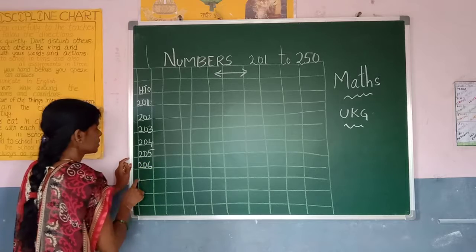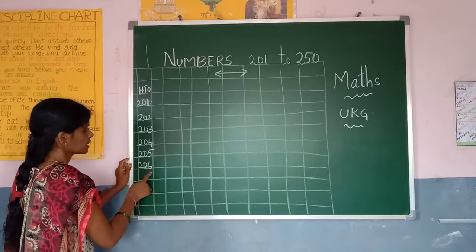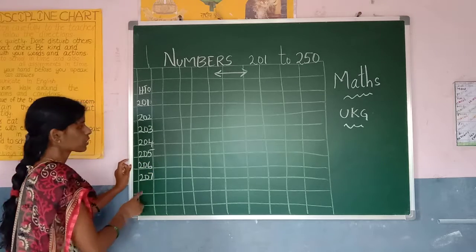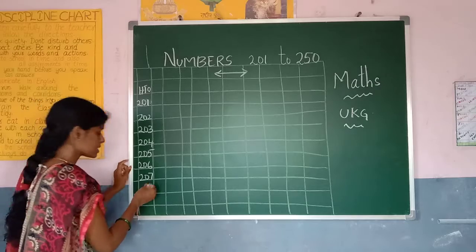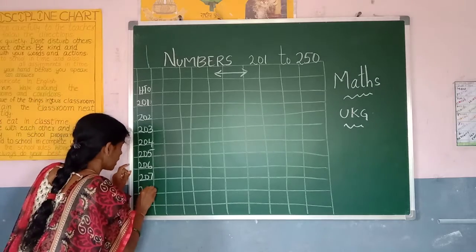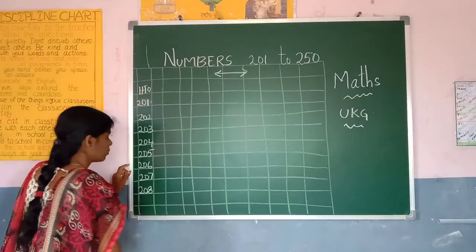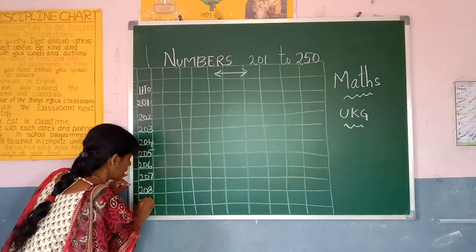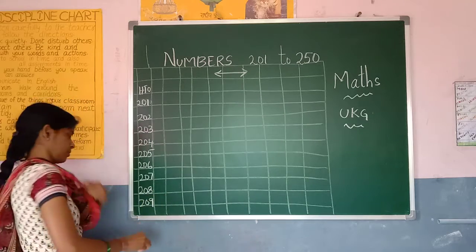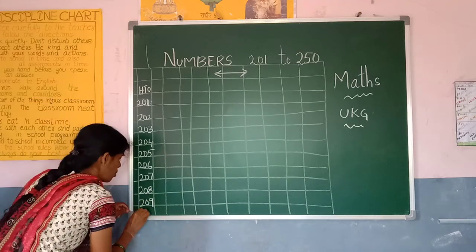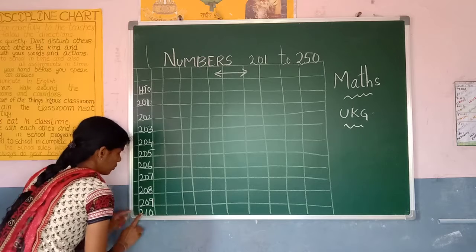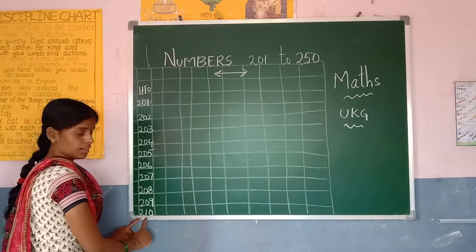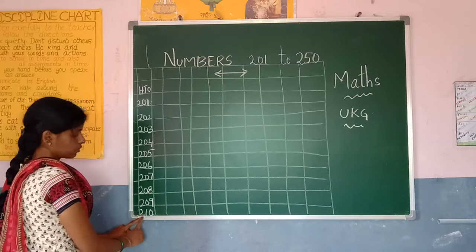2-0-6, 206. 2-0-7, 207. 2-0-8, 208. 2-0-9, 209. 210.